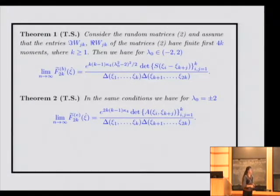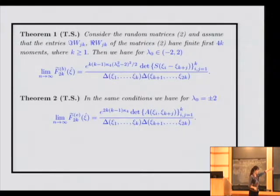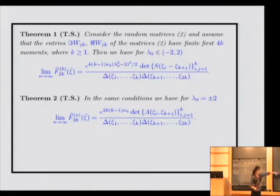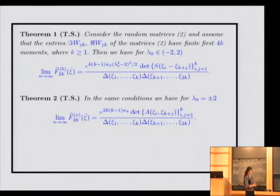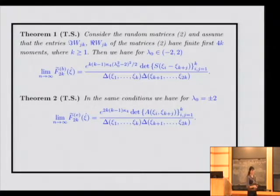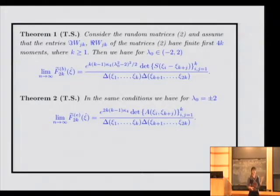When we take the limit, we have results showing that this limit in the bulk of the spectrum equals a determinant with a coefficient, and at the edge of the spectrum we obtain the determinant of the Airy kernel with another coefficient. Thus, you can see that only the fourth cumulant gives a contribution in the above limit — higher moments do not contribute.